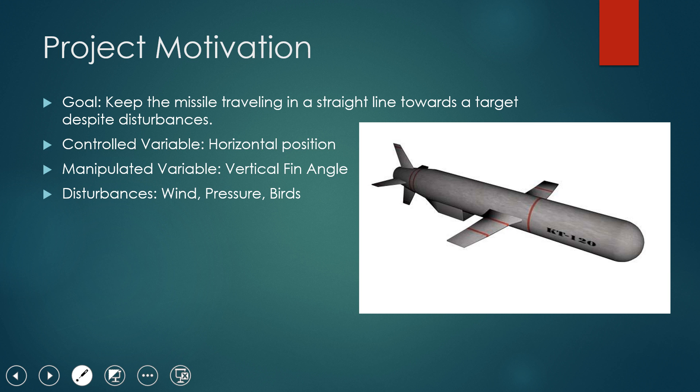So our focus has been on Tomahawk missiles. And our goal is to keep the missile traveling in a straight line towards the target, even with disturbances along the way. So we've been looking mostly in the horizontal axis. And so our controlled variable is horizontal position. We'd like to be able to keep that at the zero position on the axis, keep a straight trajectory.